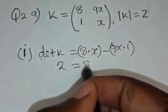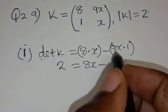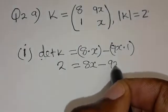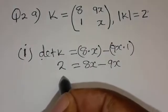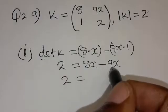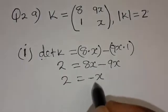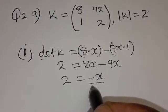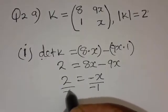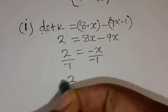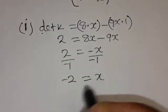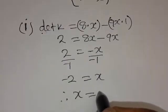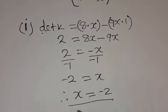So 2 equals 8 times X, which is 8X, minus 9X times 1, which is 9X. So 2 = 8X − 9X = −X. We're going to divide both sides by negative 1, giving negative 2 equals X, which means X is equal to negative 2.